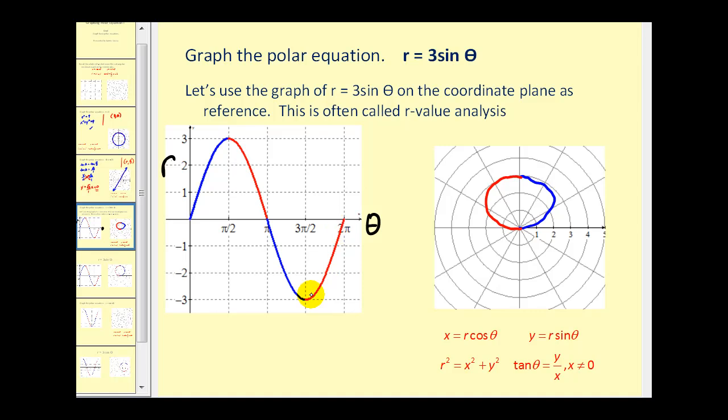And the same thing with this red piece from three pi over two to two pi, r is negative. So we'll be plotting points up here in the second quadrant, rather than the fourth.